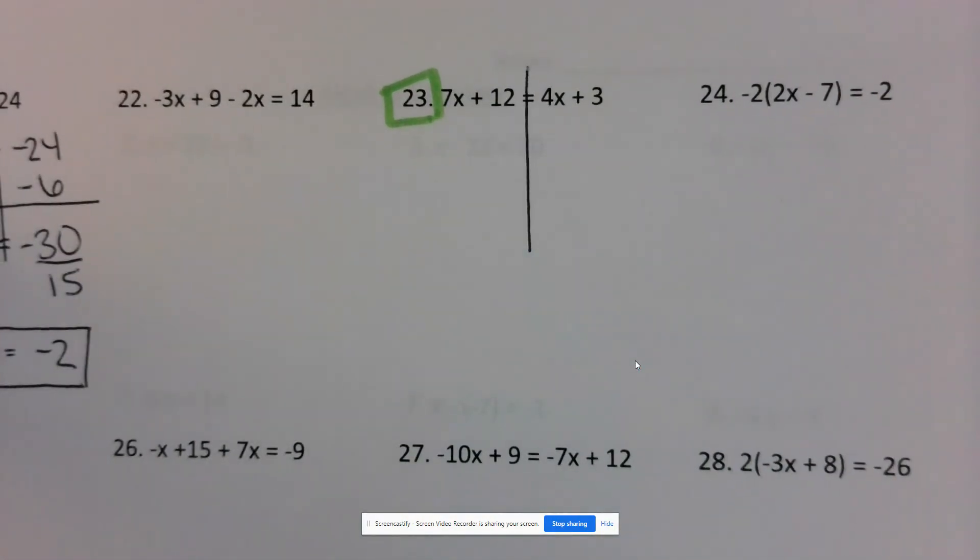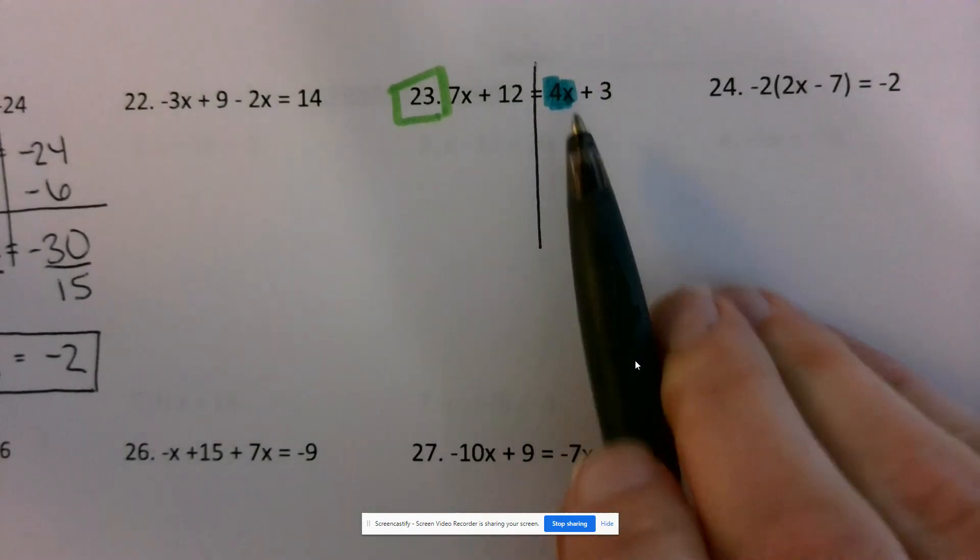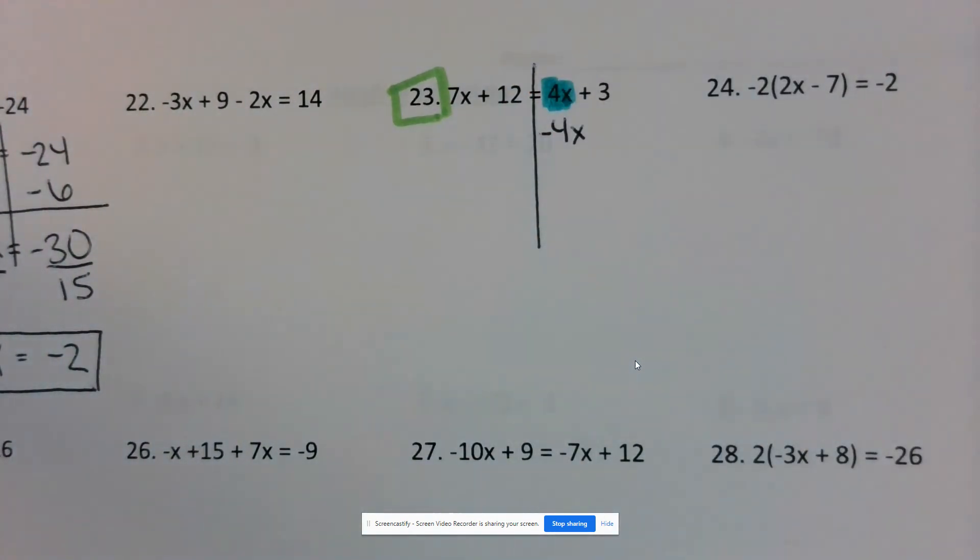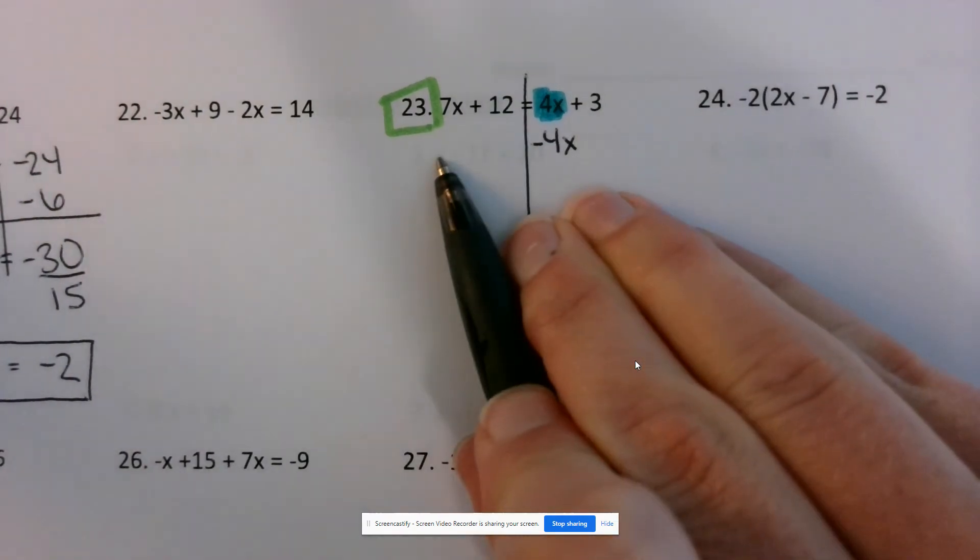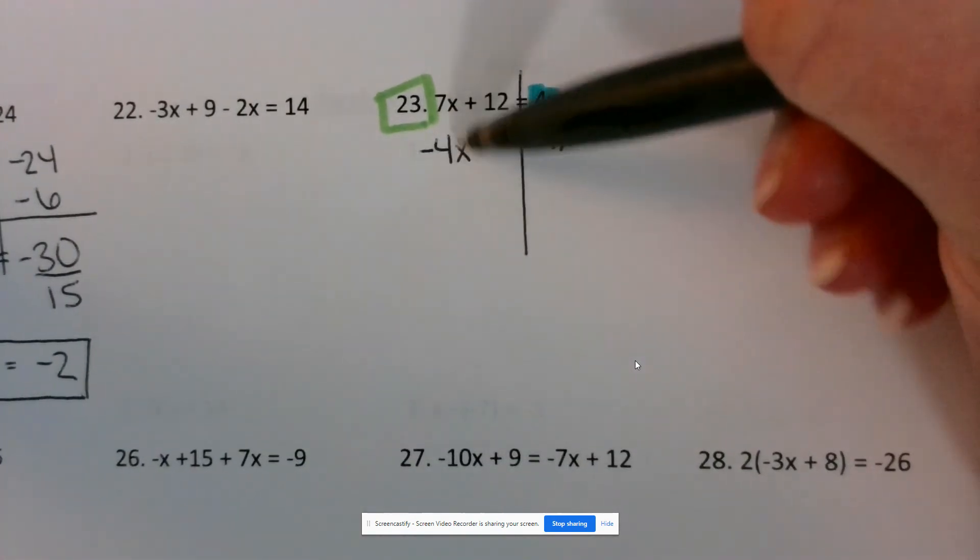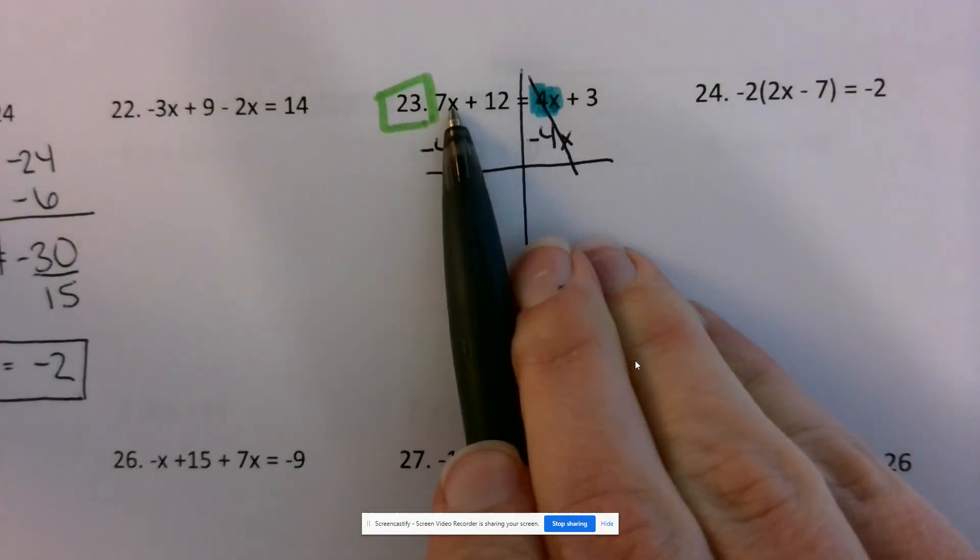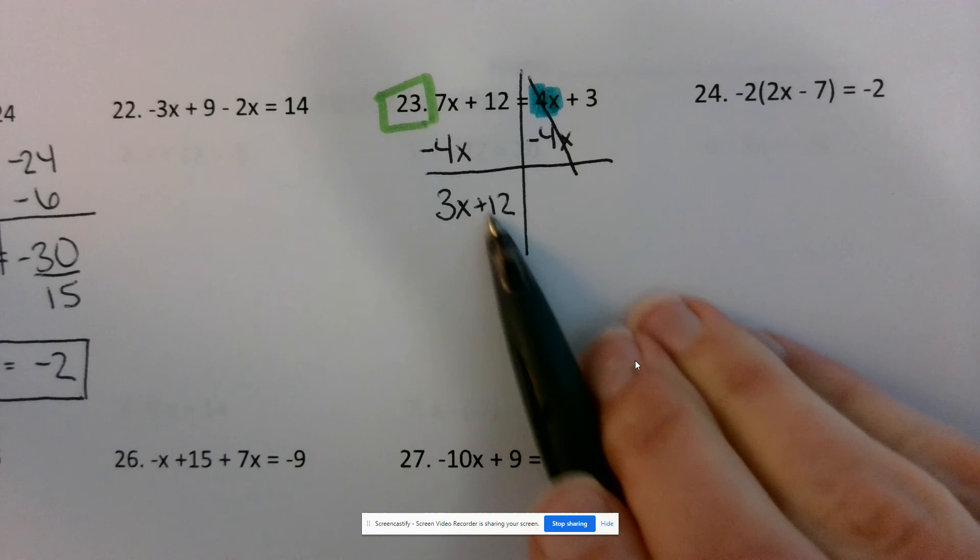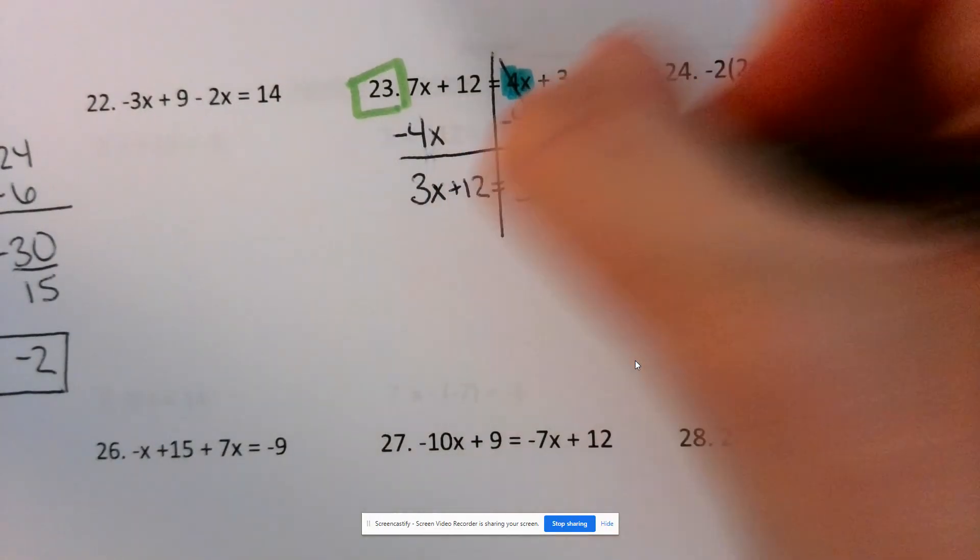Since I want to get rid of 4x, I have to think about what's going to undo that and cancel it to 0. This is a positive 4x, so if I want to get rid of that, I need to subtract 4x. 4x minus 4x is 0. Whatever I do to one side of my equation, I have to do the same thing to the other side. So I'm going to subtract 4x on the left. 7x minus 4x is 3x. My plus 12 just tags along. I can't do anything with the 12 because it's not a like term. And I'm left with 3 on the right side.